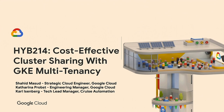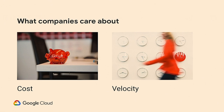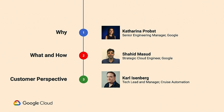We're here to talk about cost-effective cluster sharing with GKE multi-tenancy. If you listened to yesterday's keynote, you heard Eyal Manor talk about how it's very important for customers to deliver value quickly and to iterate quickly. Our customers want to deliver value at the minimum cost possible. We'll cover how a GKE multi-tenancy strategy fits into this picture. I'm Katerina Probst from Google. Shahid Masood will cover the what and how of multi-tenancy, and Carl Eisenberg from Cruise Automation will give a real-world scale customer perspective.